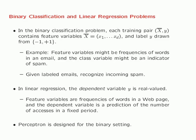In the binary classification problem, you have training pairs, and each training pair contains feature variables. You have a feature vector with d dimensions — x bar, where the overbar notation is used throughout this course whenever you're using a vector. It has d dimensions denoted by x1 through xd. Along with the feature variables, you have a label y, which is drawn from minus 1 or plus 1.